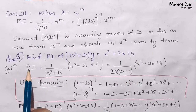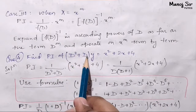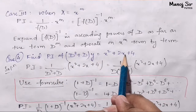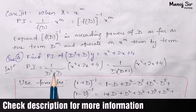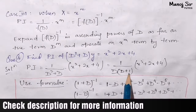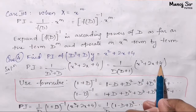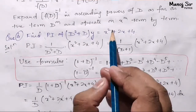We start with PI equals 1 upon (D² + D) into (x² + 2x + 4). Now we take D common, so we get 1 upon D(D + 1) into (x² + 2x + 4).